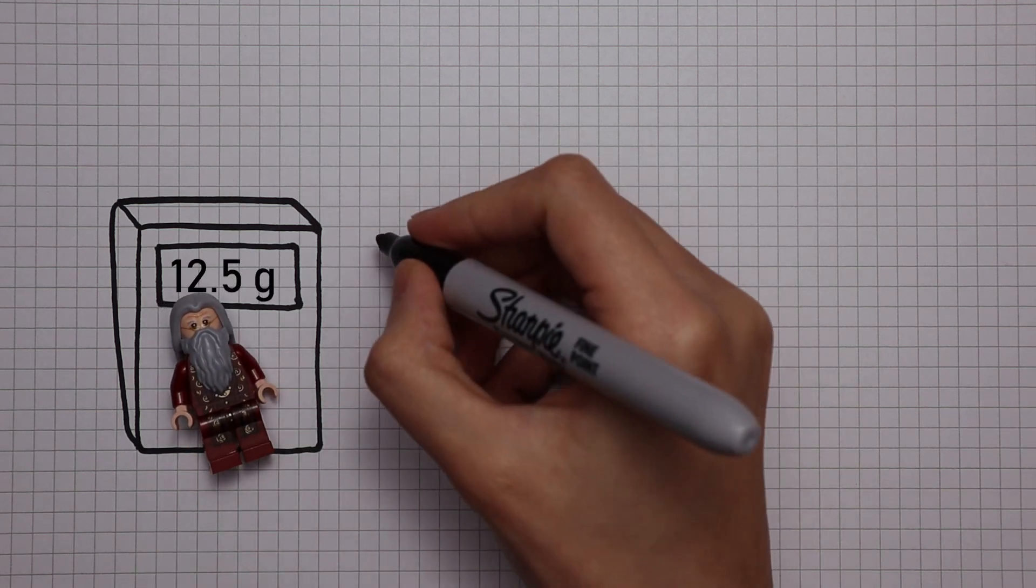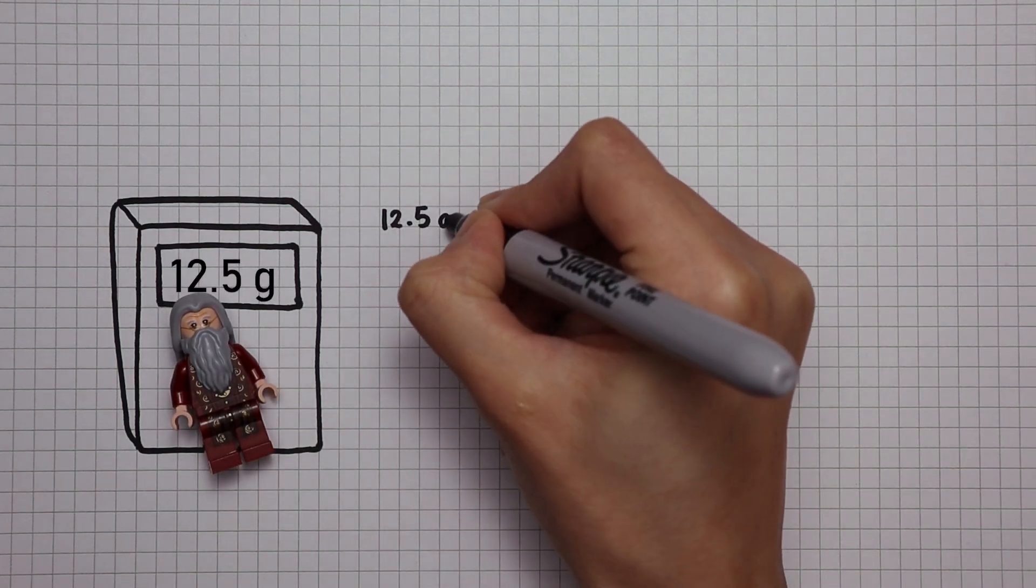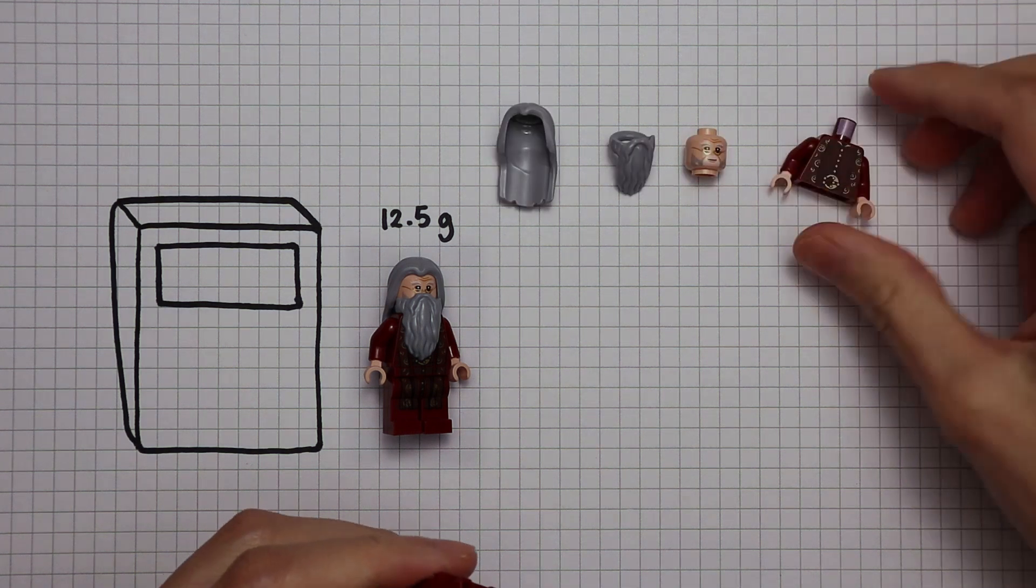If I break Dumbledore apart and weigh the individual parts separately, how would it differ from when I weigh it as a whole?